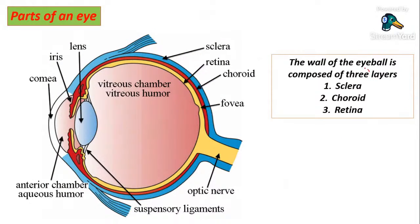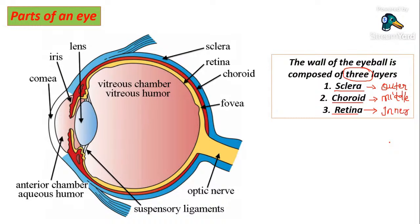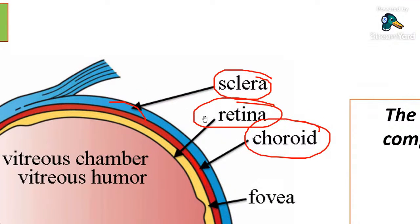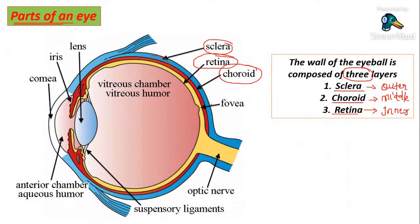There are mainly three different layers of the eye. The sclera is the outermost layer, the choroid is the middle vascularized layer, and the retina is the innermost layer. So: sclera — outermost; choroid — middle; retina — innermost.